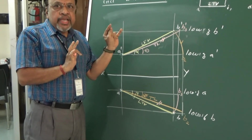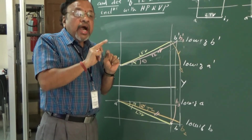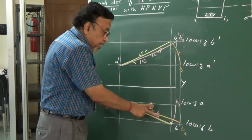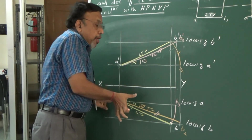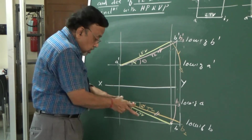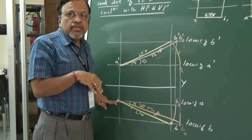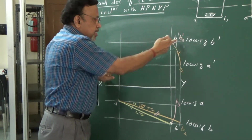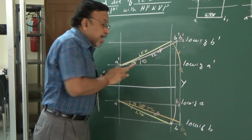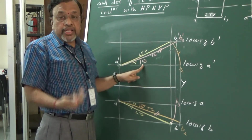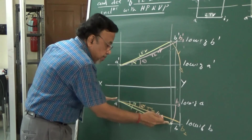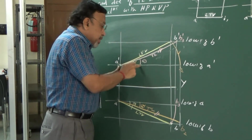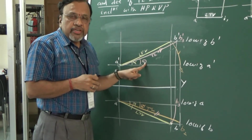The golden rule states: when a line is parallel to XY in the top view, it is being made parallel to VP. Since it is parallel to VP, the true length appears in the front view, and the angle with the other plane — HP — gives theta. Similarly, when made parallel to XY in the front view, you see the true length in the top view and get the inclination with VP, which is phi.